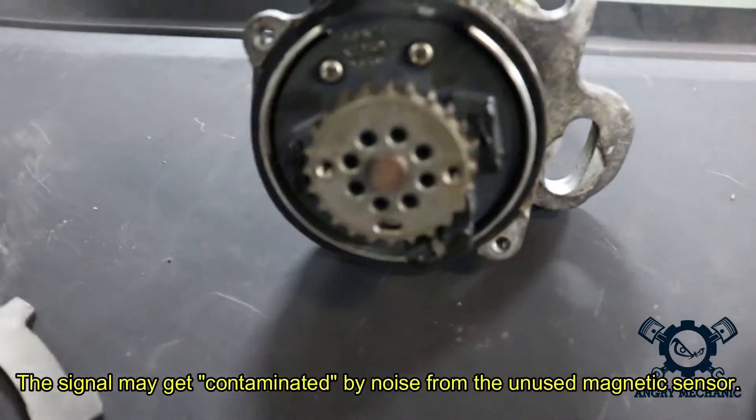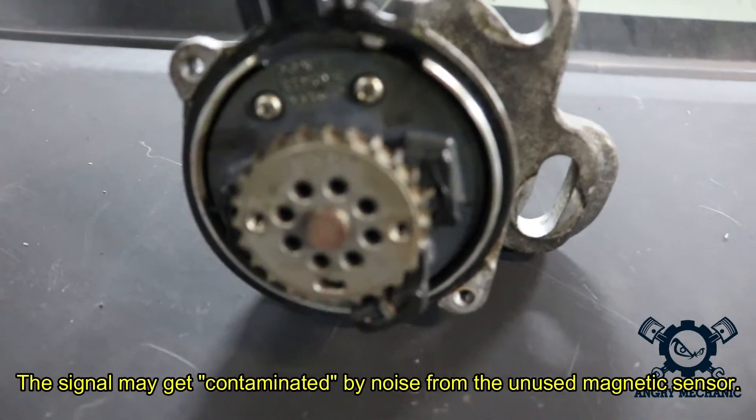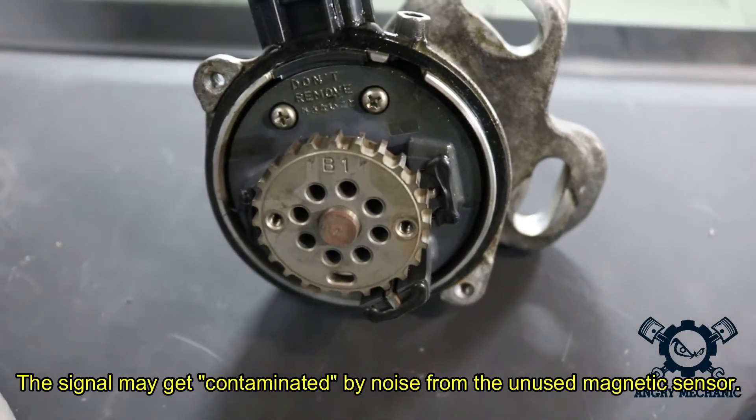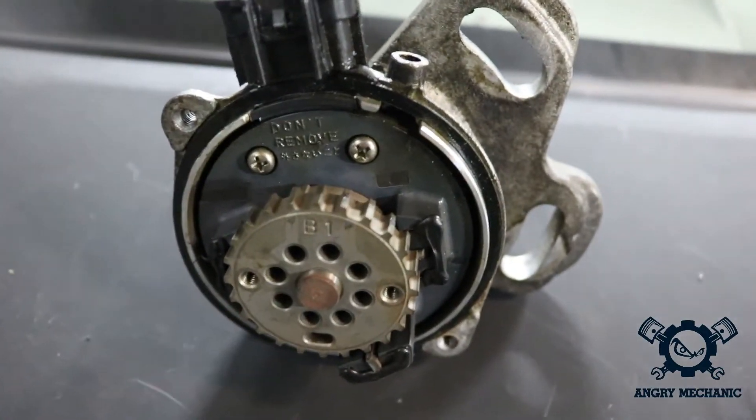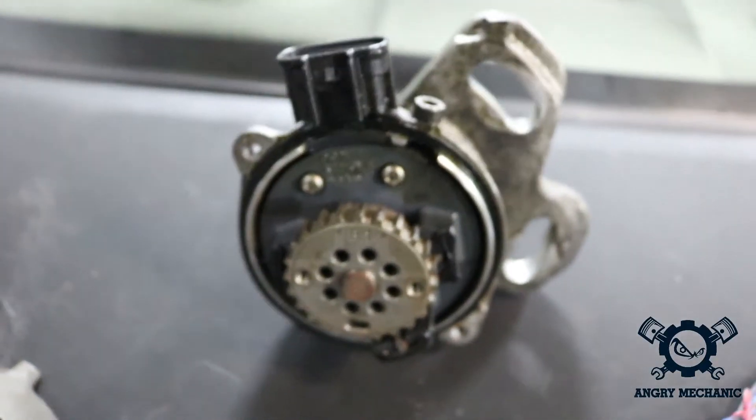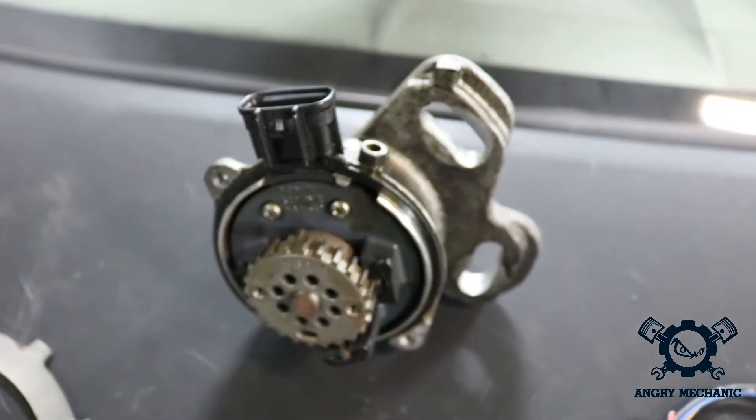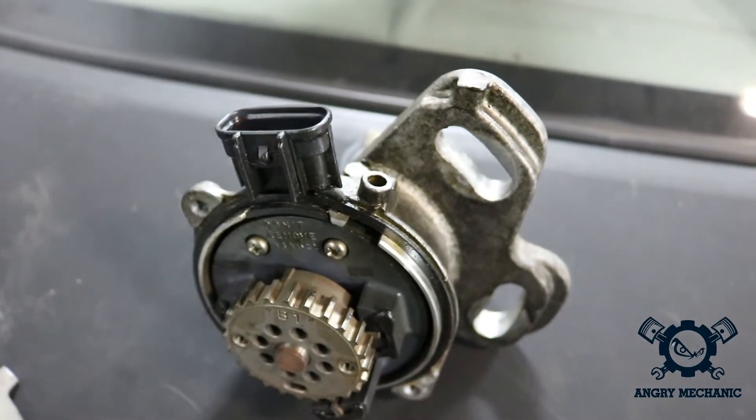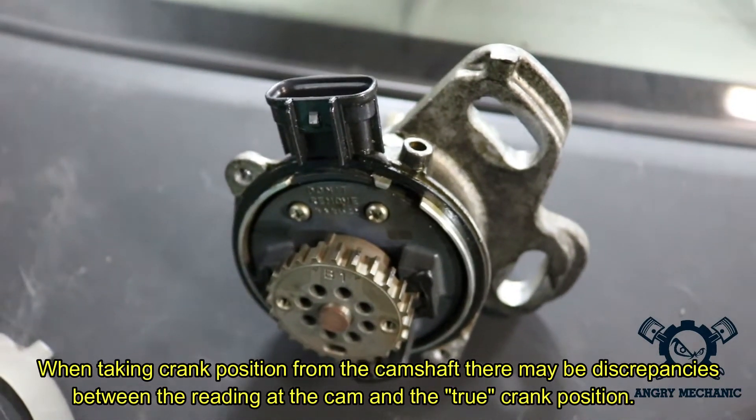Because what happens when you spin this thing really fast, you actually get a little bit of noise from the other pickup. And it's not desirable. You get all sorts of trigger errors with that. Another thing that I would like to note about this setup, because it's not very well suited for high RPM applications, is because it's driven by the camshaft, you have a little bit of deflection in your timing belt. And because of that...